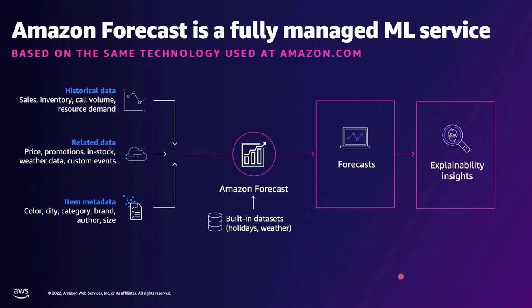As shown in the diagram, customers import their historical data into Amazon Forecast. With the data imported, the service sets up a data pipeline that trains time series models based on your unique data, providing accuracy metrics and generating future dated forecasts.